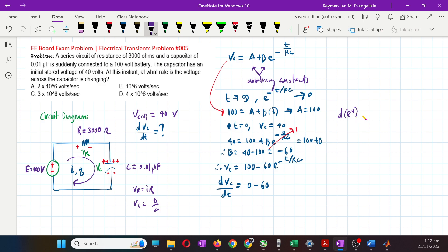100 is constant, so 0. Minus 60, the derivative of e to the u is e to the u times du. So that is e to the u, du. Just copy e to the negative t over RC.